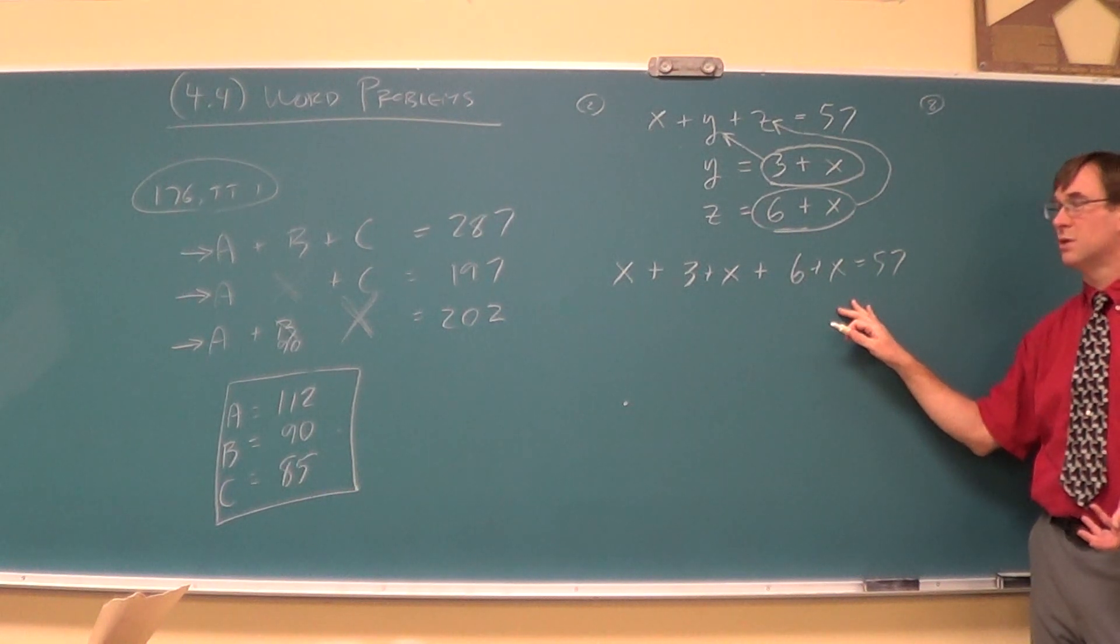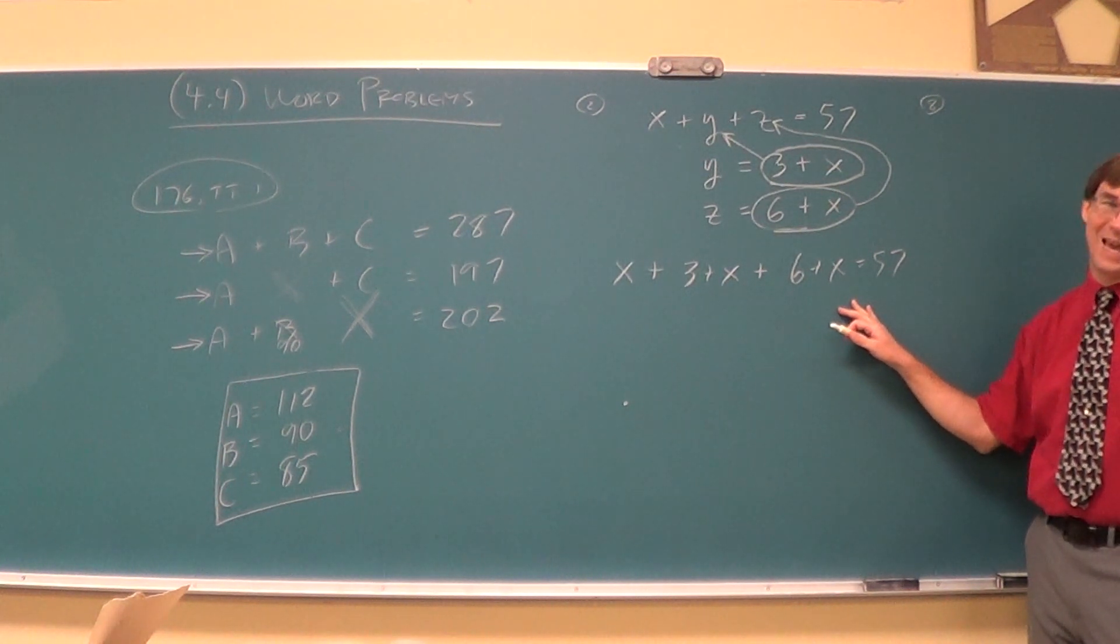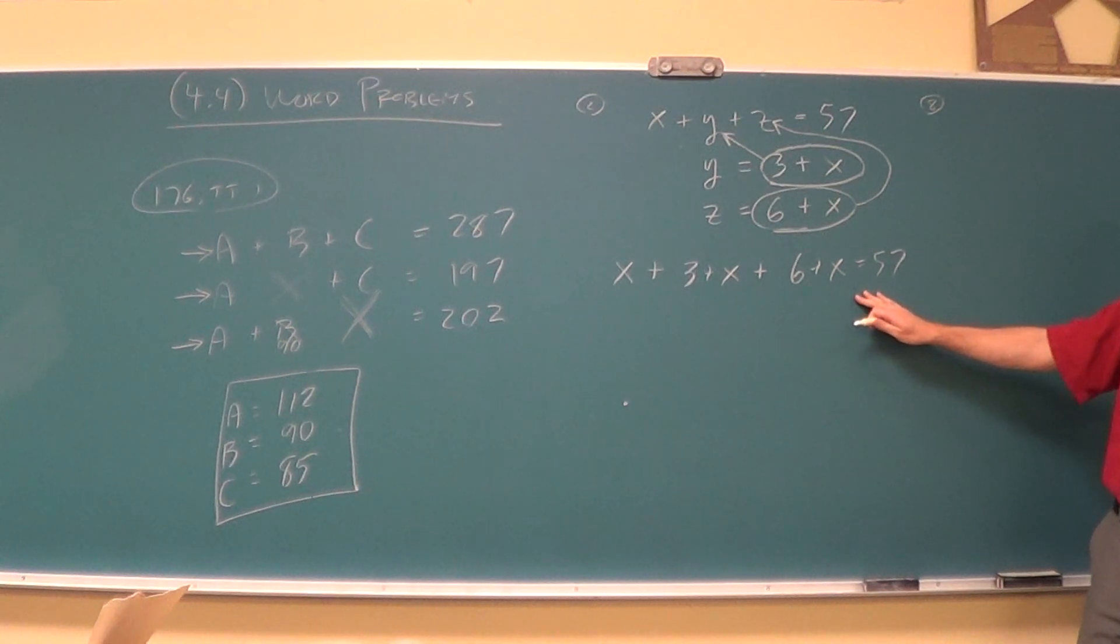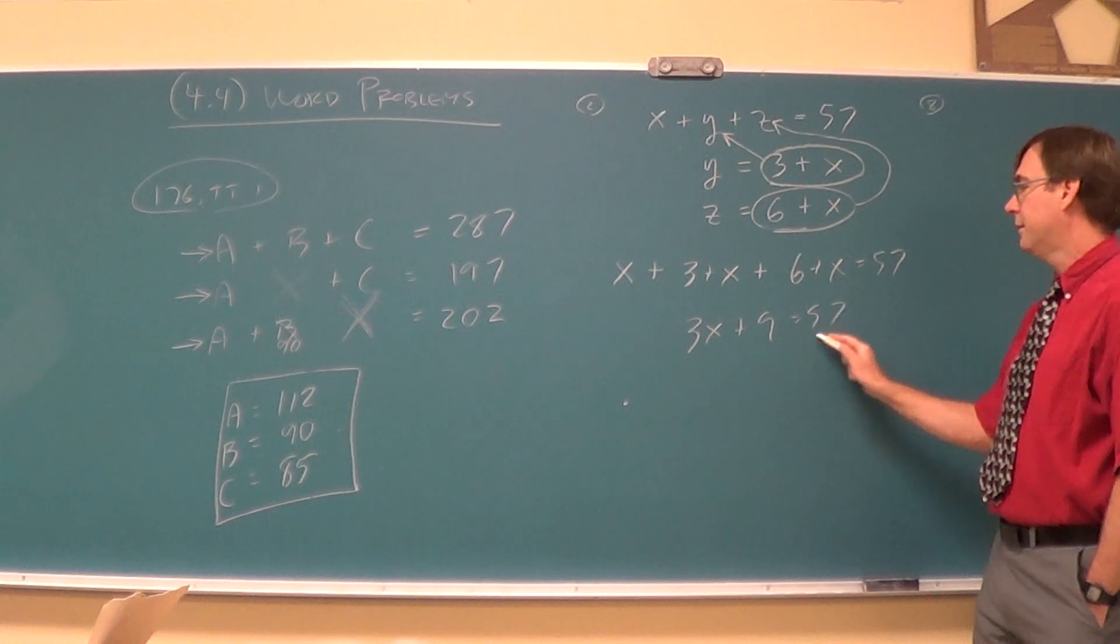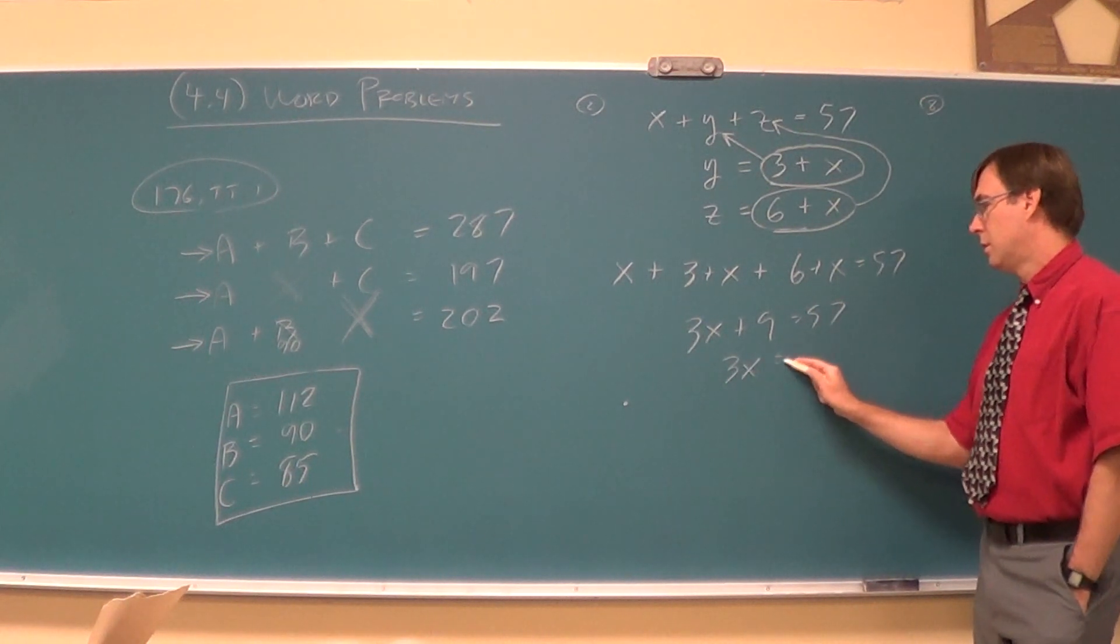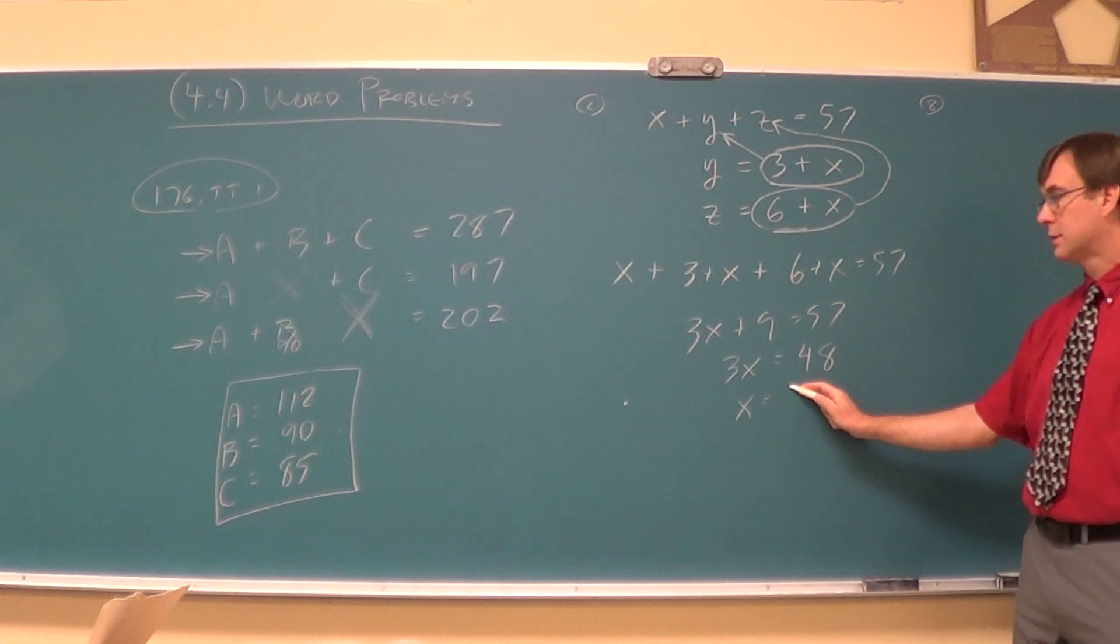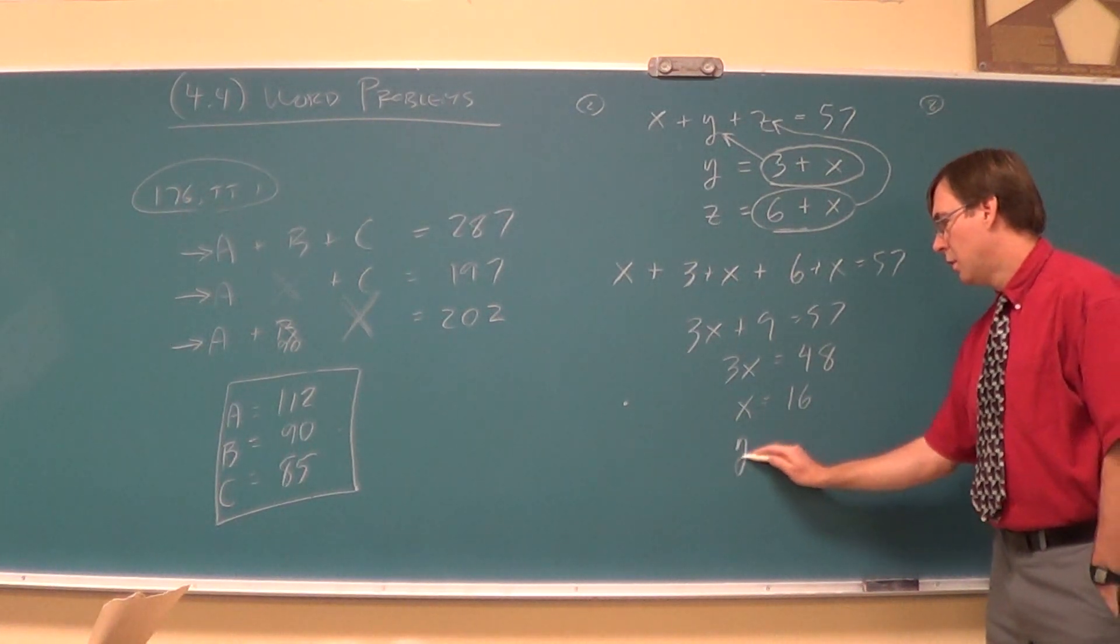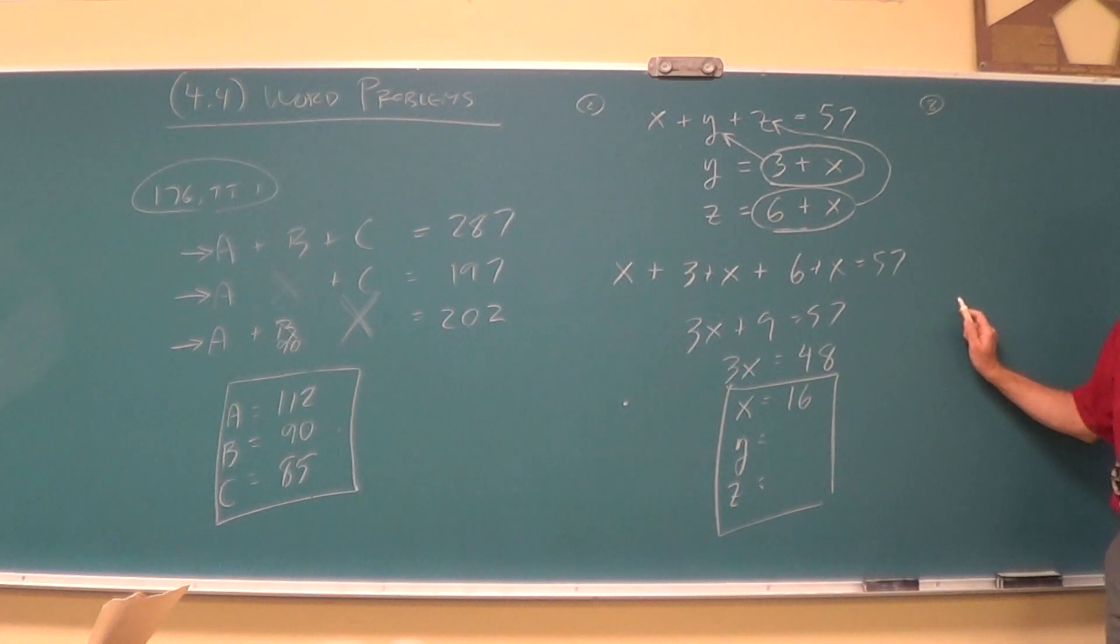On the take home, is substitution going to be the way to go at all? Probably not. But in this homework, for sure, substitution is going to be nicely given to you on a platter. We'd have X plus, instead of Y, 3 plus X, plus, instead of Z, 6 plus X equals 57. 3X plus 9 equals 57. 3X equals 48. So X is 16. We still need to get Y and Z.